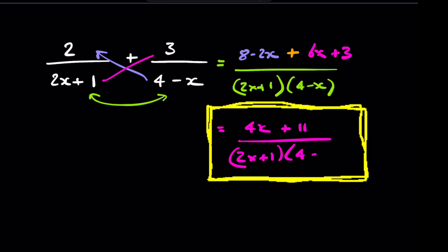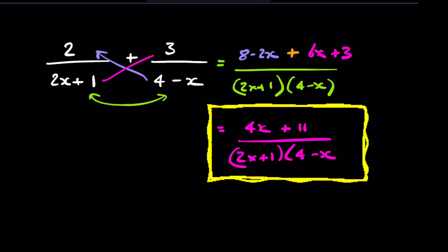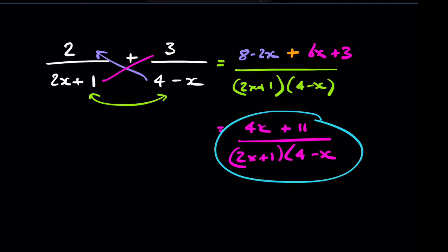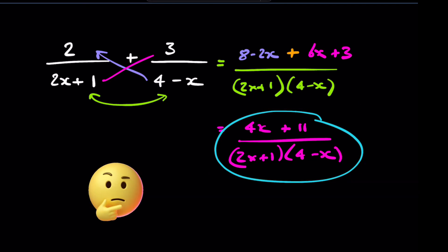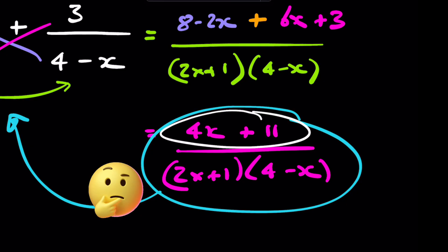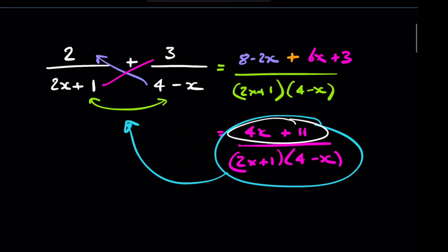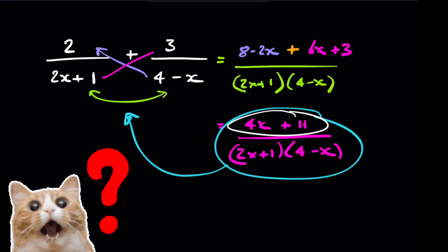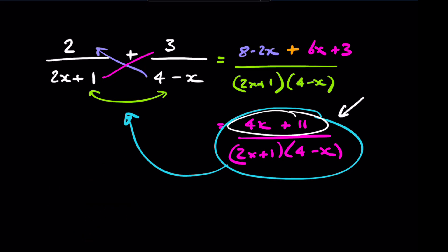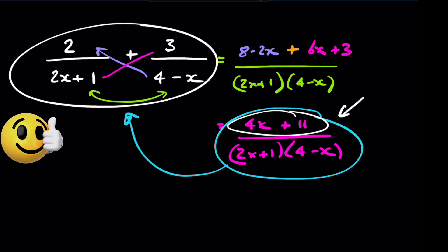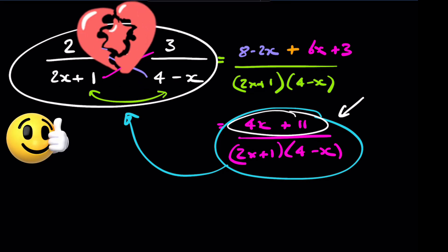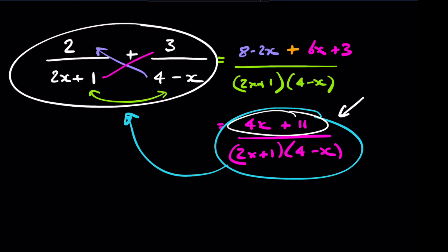That is what we're going to start with on most of these questions. It's quite difficult to work backwards from that point and get back to the separated form, because it's difficult to know how to split up the 4x+11. This process is important because if we're asked to integrate something like this, moving back to these simpler values makes it a lot easier to integrate.